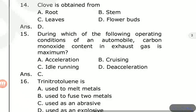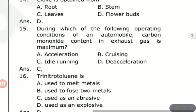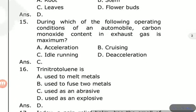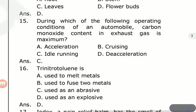Trinitrotoluene is dash. Options are: used to melt metals, used to fuse metals, used as an abrasive, used as an explosive. Trinitrotoluene is used as an explosive. Trinitrotoluene is TNT.